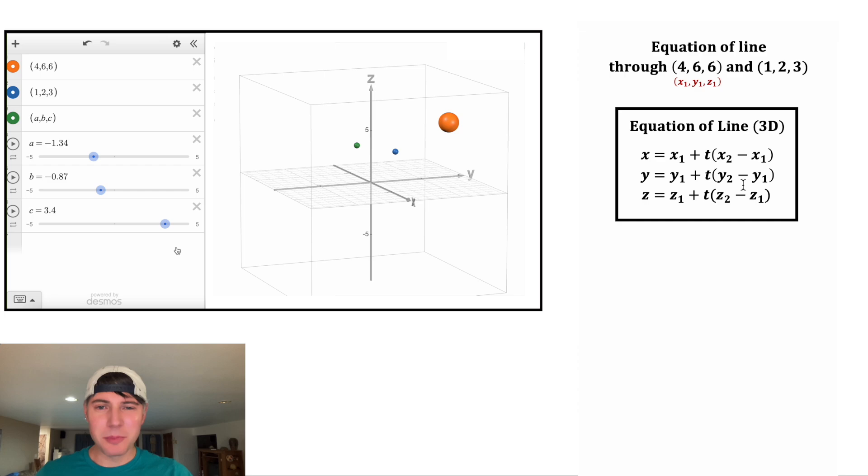And then for x sub 2, y sub 2, z sub 2, that's the coordinates of our second point, x sub 2, y sub 2, z sub 2. And then t is called a parameter. T can equal any number within a range that we allow. And that's what forms the line. And I'll show you that in a little bit.